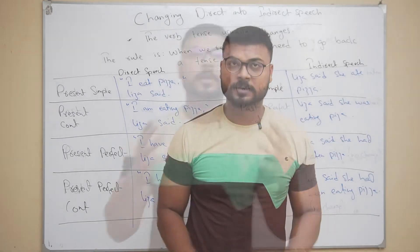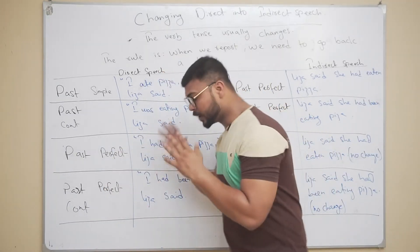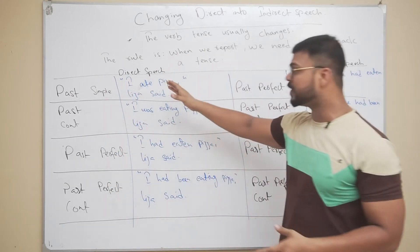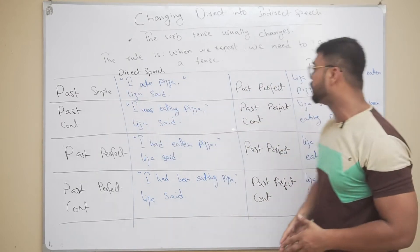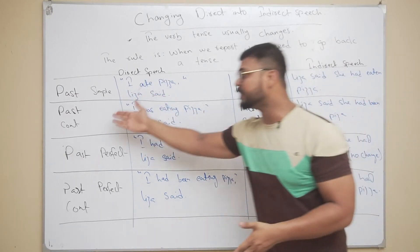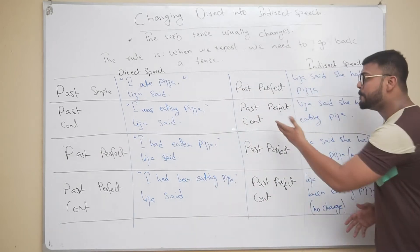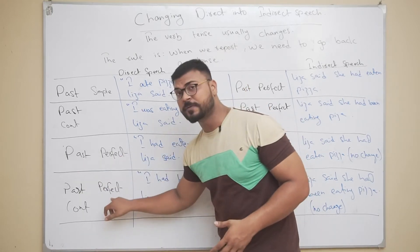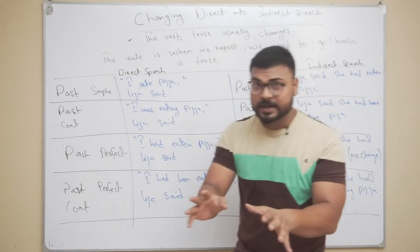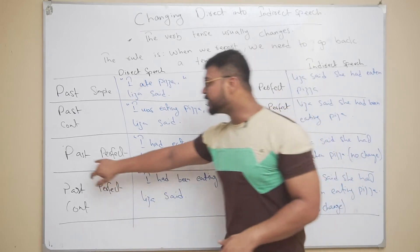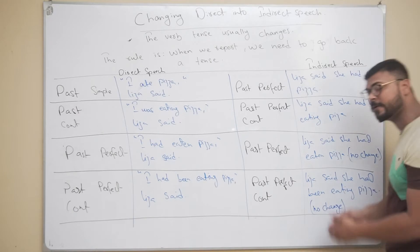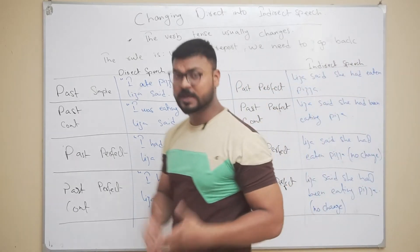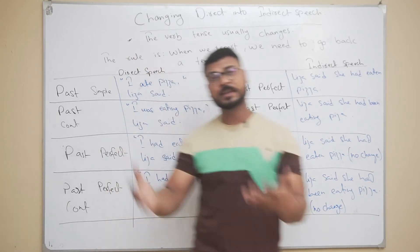Now for the conversion of past tenses. In indirect speech, past simple becomes past perfect, and past continuous becomes past perfect continuous. However, past perfect and past perfect continuous have no changes — they remain the same tense when converted into indirect speech.